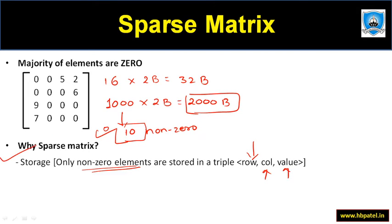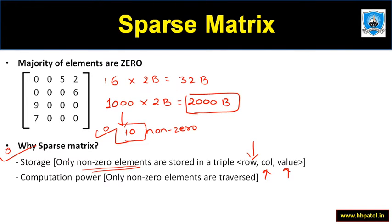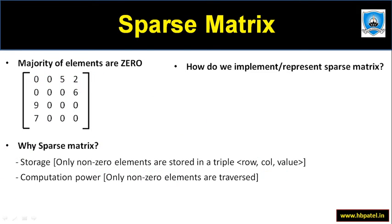Computational power will be improved because only non-zero elements are stored — zero elements are not stored. We will be storing only non-zero elements along with the respective row and column of that particular element. Sparse matrix can be implemented using an array or also using a linked list.